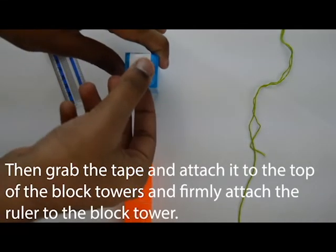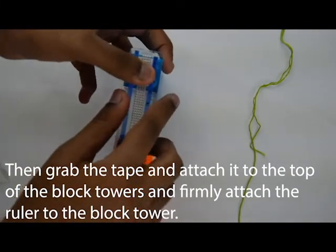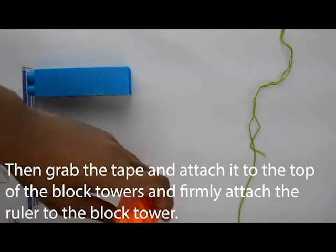Then grab another piece of tape and place it on the top of both towers, the blue and the orange. By doing so, connect the top of the ruler with magnets still facing downwards onto both towers.